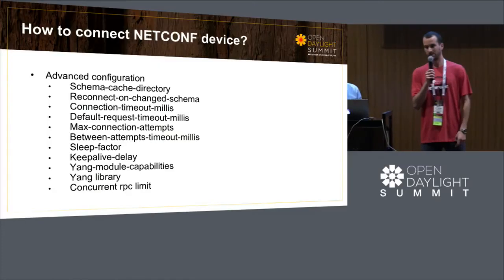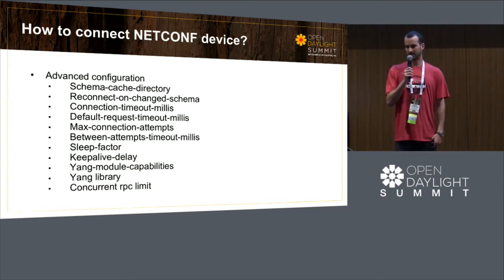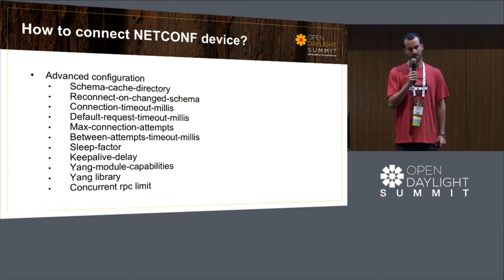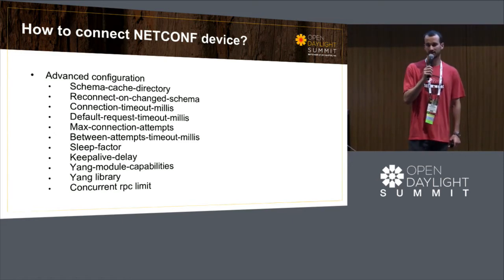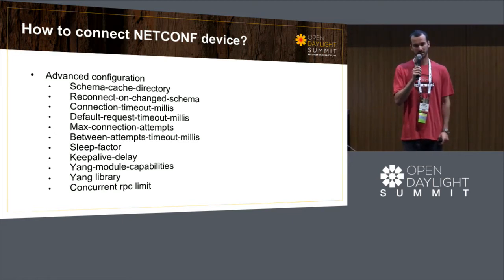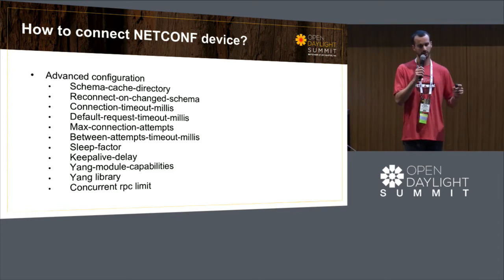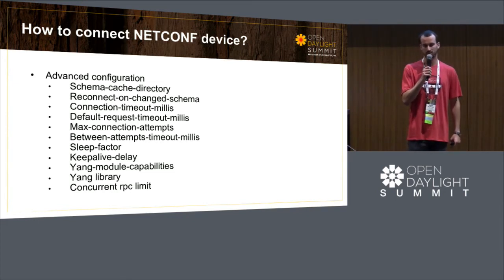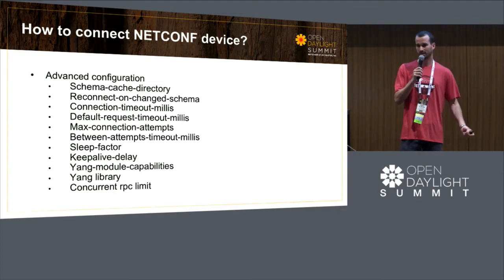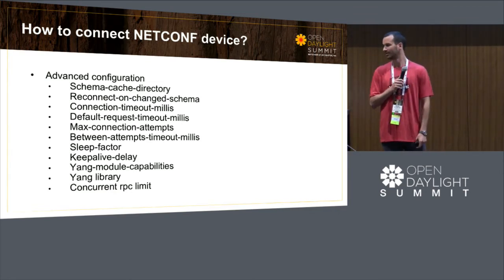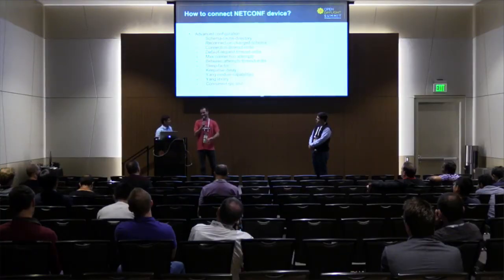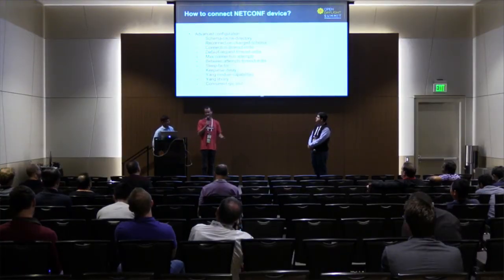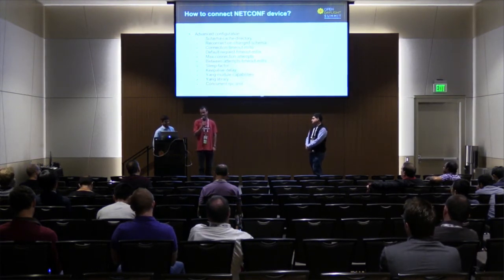The YANG model capabilities option: basically, if your netconf device doesn't support IETF netconf monitoring and exposes a capability but doesn't provide the model for it, you would have to sideload it. You would use that configuration knob to specify what model you want to sideload, and there's a mechanism behind the scene — you'd have to put that model under the cache schema directory of OpenDaylight. It's a bit technical, but it's a possibility if you're having trouble mounting your device.